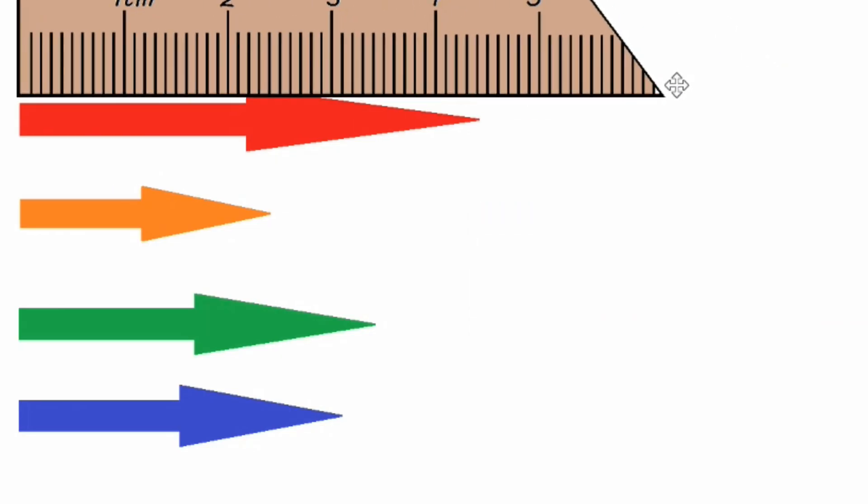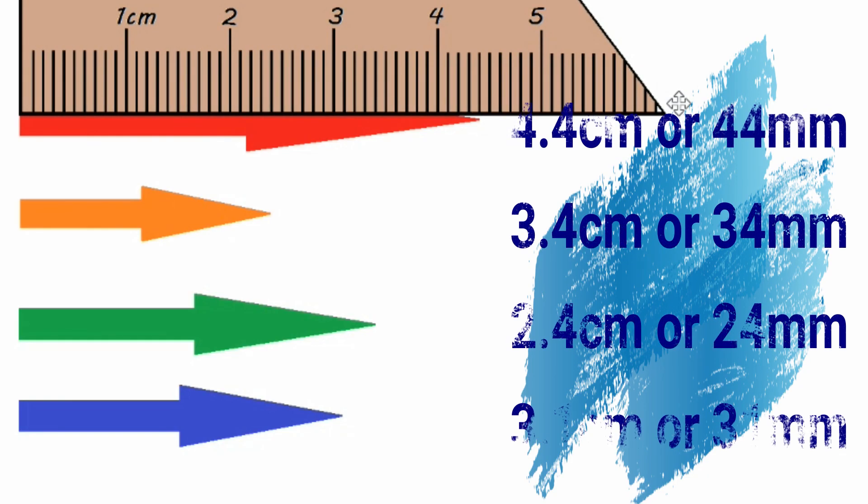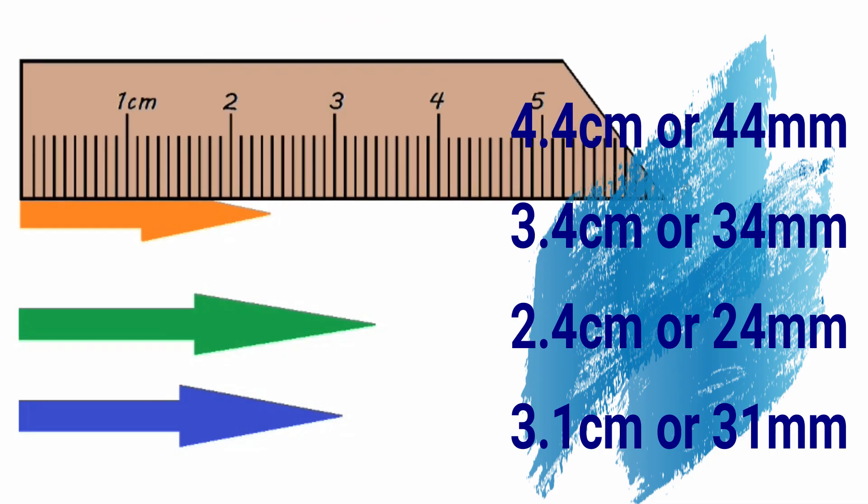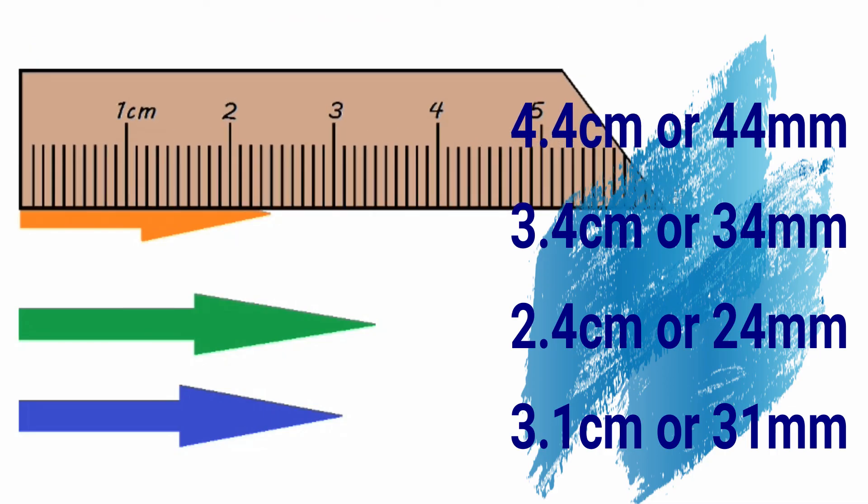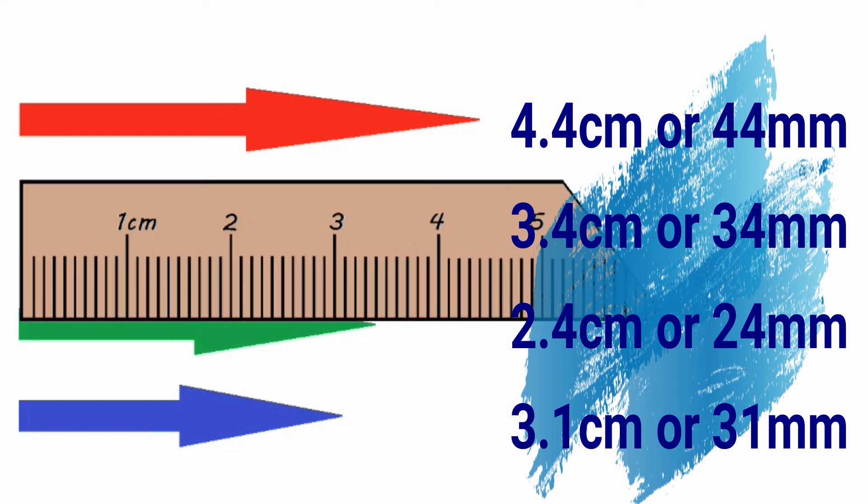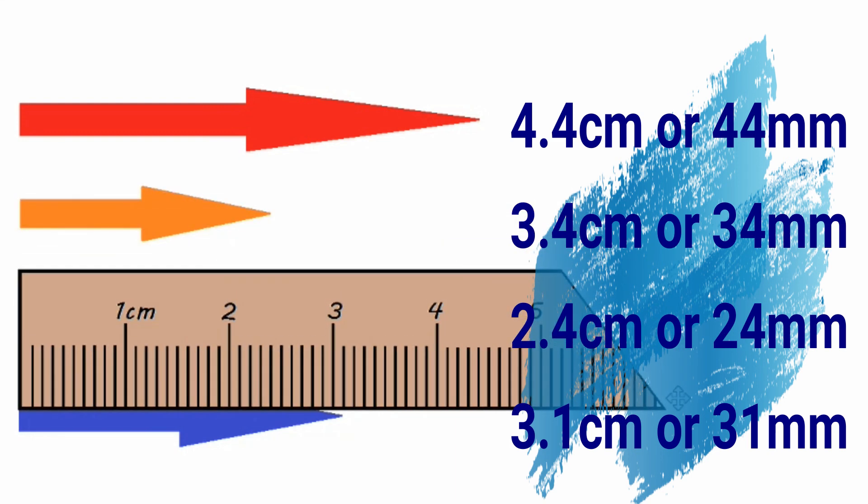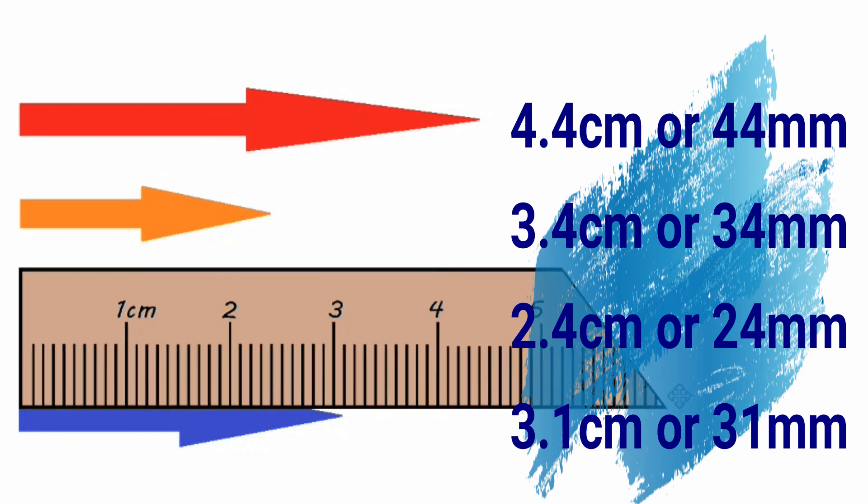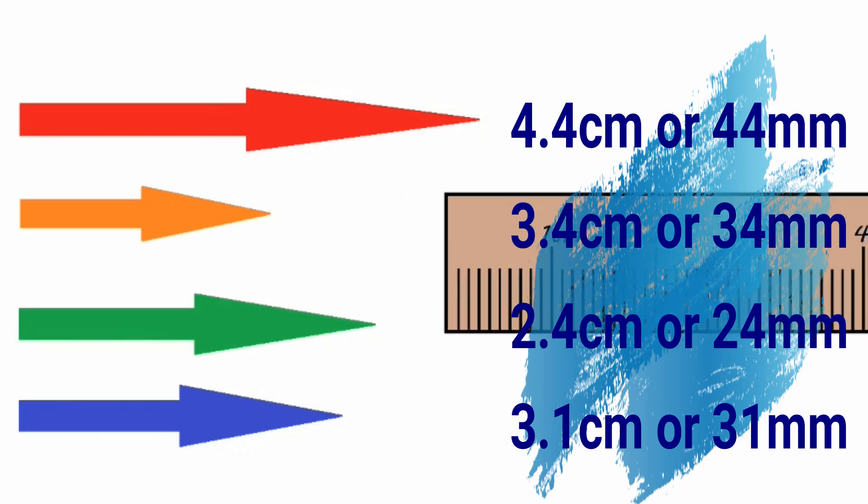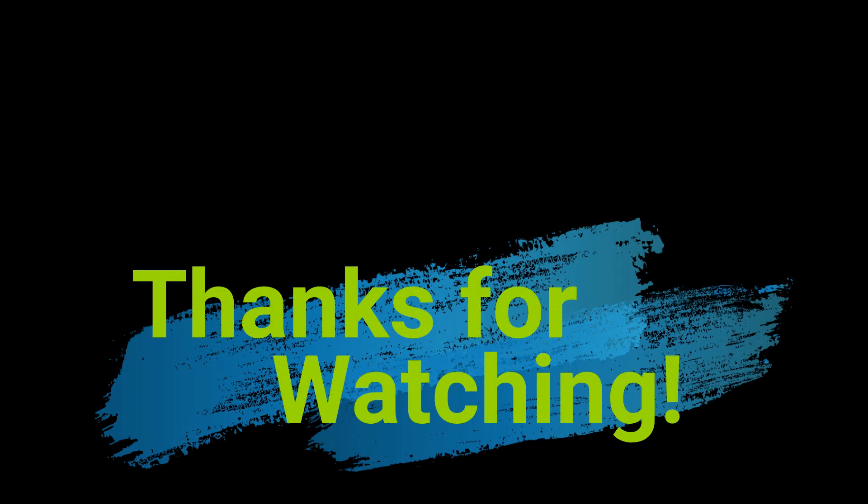The red arrow is 4.4 centimeters, or 44 millimeters. The orange arrow is 2.4 centimeters, or 24 millimeters. The green arrow is 3.4 centimeters, or 34 millimeters. And lastly, the blue arrow is 3.1 centimeters, or 31 millimeters.